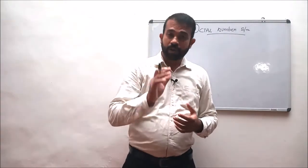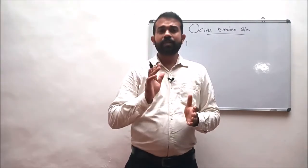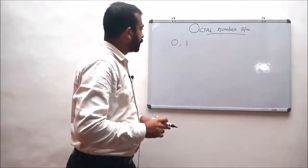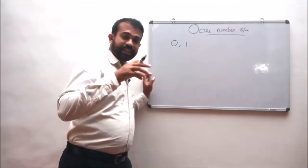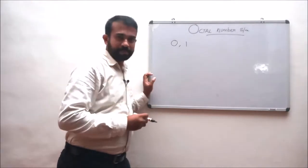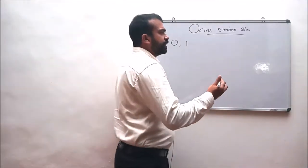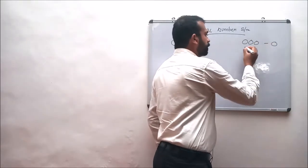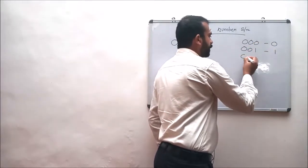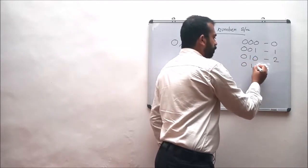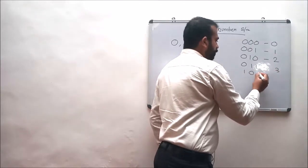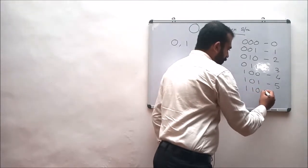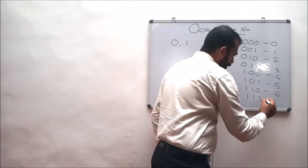So instead of memorizing all available codes, the octal number system mediates the representation of binary to a decimal number system — this octal number system shares the concept behind binary to decimal conversion. Let us consider the binary numbers and their decimal equivalents: 0000 is 0, 001 is 1, 010 is 2, 011 is 3, 100 is 4, 101 is 5, 110 is 6, and 111 is 7.